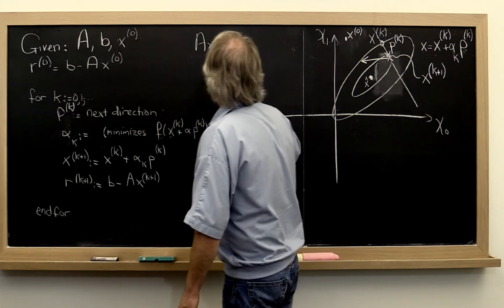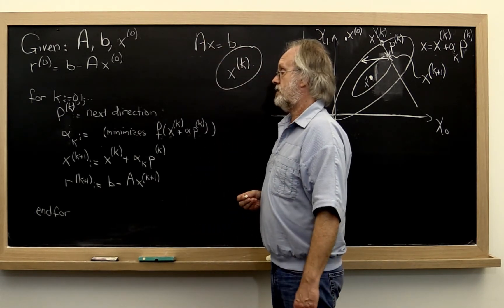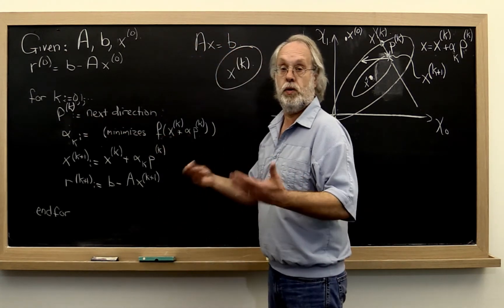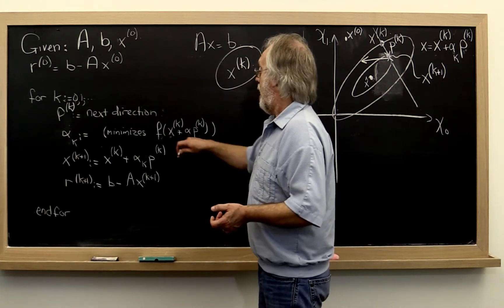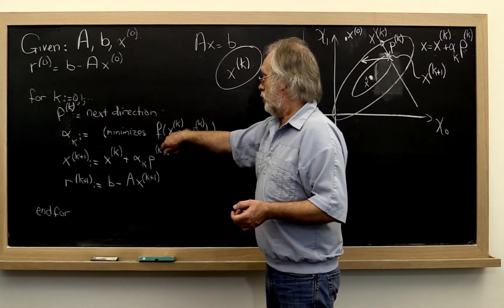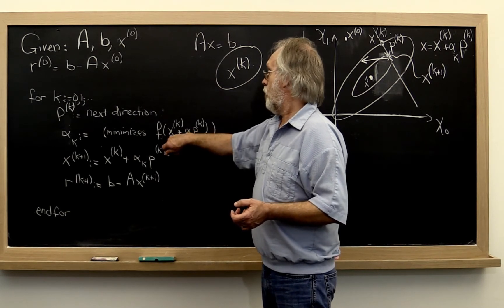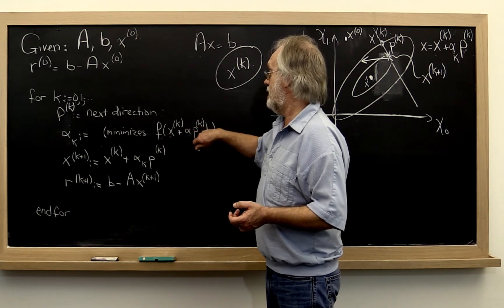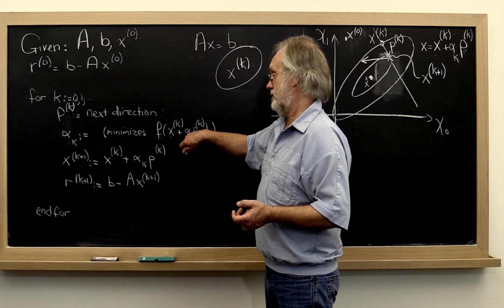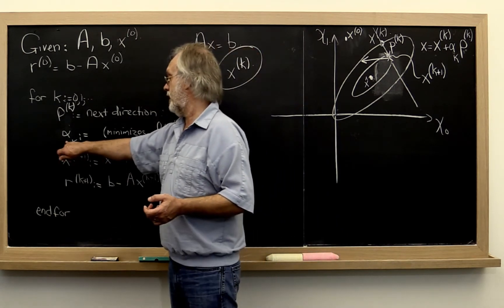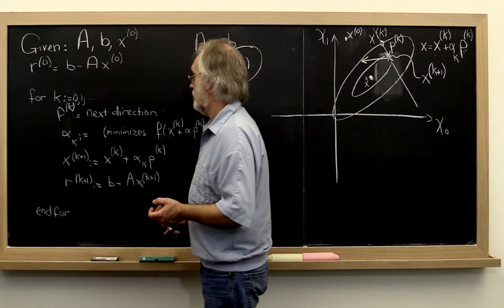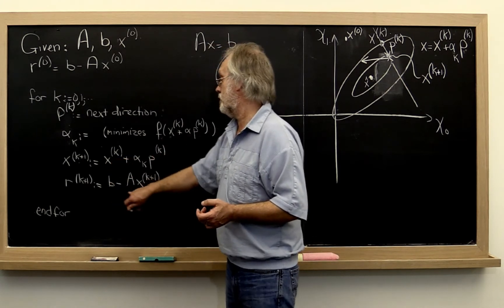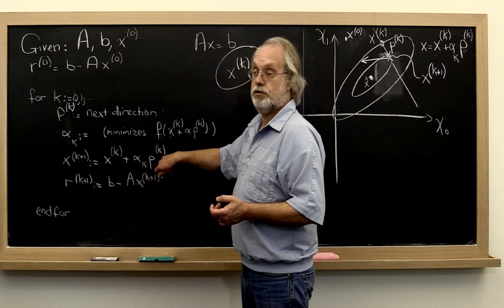And what do we do every time? Well, if we so far have already computed xₖ, then we need to pick somehow a next direction in which to search. And what we then do is say, okay, let's look at all vectors of the form xₖ plus alpha times that search direction. And let's minimize that. In other words, let's pick the alpha that minimizes this. And let's call that alpha_k.